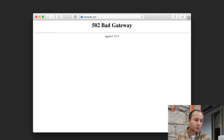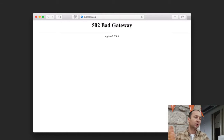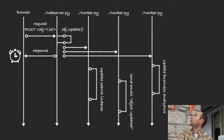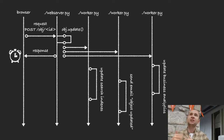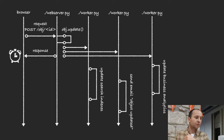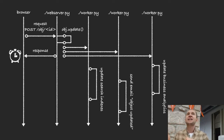What can we do? It sounds natural to exclude unrelated actions from the request-response cycle as much as possible. The idea is to include in the request-response cycle only things which are crucial for the response — like updating the object itself — and offload everything else to other parts of the system.